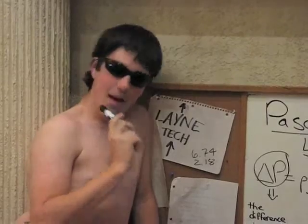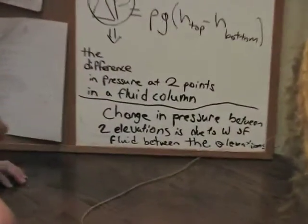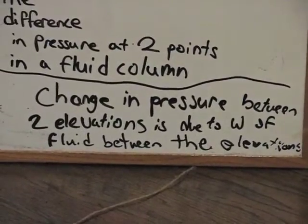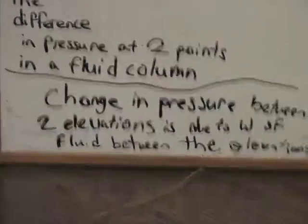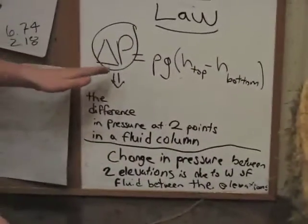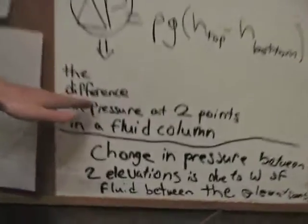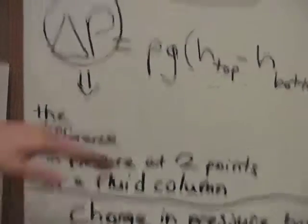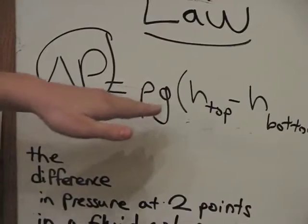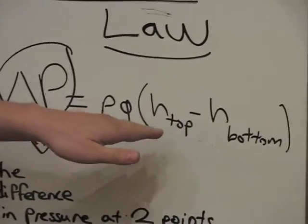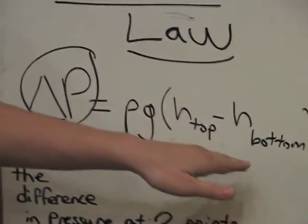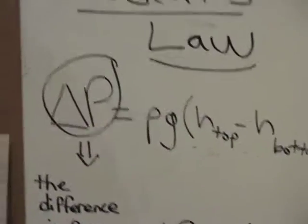Pascal's Law states that a change in pressure between two elevations is due to the weight of the fluid between those elevations. In other words, delta P — the difference in pressure at two points in a fluid column — is equal to the fluid density times gravity times the difference in height, which is the height of the top minus the height of the bottom.